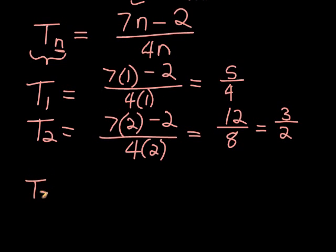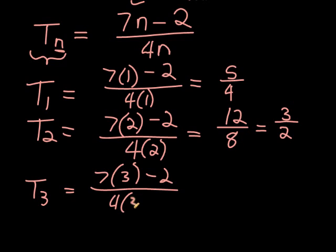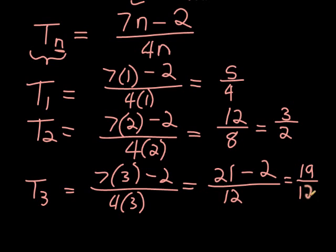For the third term, 7 times 3 minus 2 over 4 times 3. To find any term, like the hundredth, just replace N with that number. So 7 times 3 is 21 minus 2, over 4 times 3 which is 12, giving us 19 over 12.